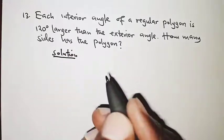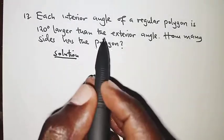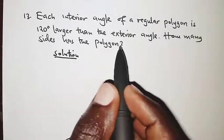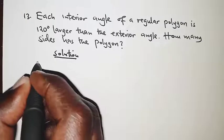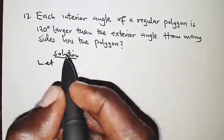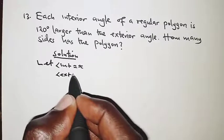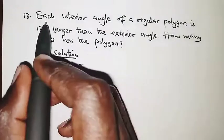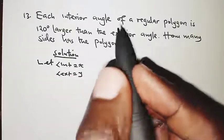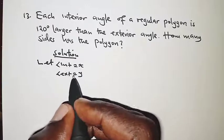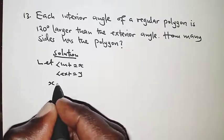First of all, we need to identify that the sum of interior and exterior angles of a regular polygon should be 180 degrees. We let the interior angle be x and the exterior angle be y. We are told each interior angle is 120 degrees larger than the exterior angle.